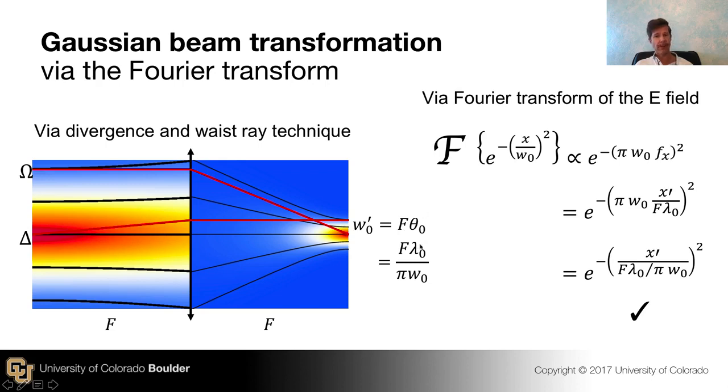We know from Gaussian beam relationships that we could relate the divergence of the Gaussian beam in front of the lens to the waist in front of the lens by λ over πW0. So I just substituted in that Gaussian beam expression. So now we know how the waist size behind the lens relates to the initial waist size in front of the lens.